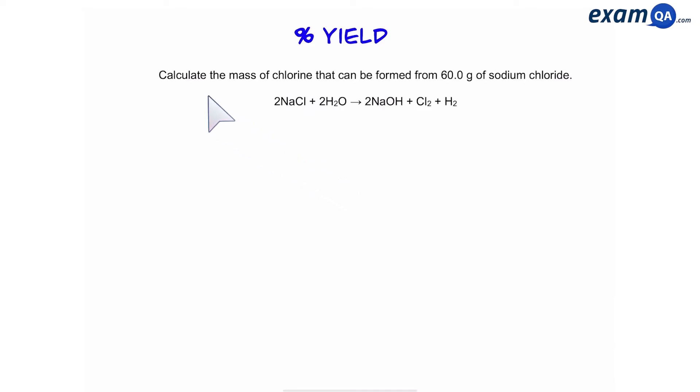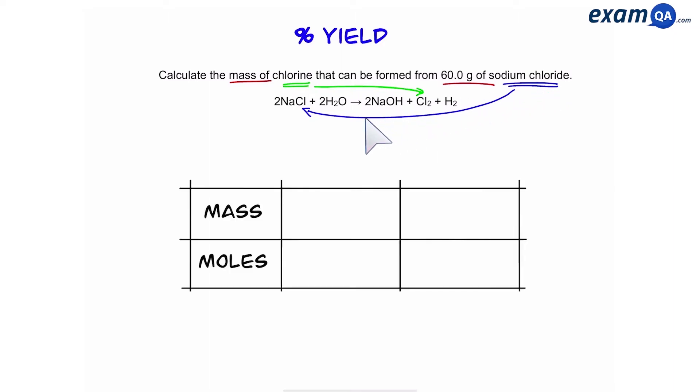Let's say we have the question: calculate the mass of chlorine that can be formed from 60 grams of sodium chloride. This is very similar to reacting masses. Just like before, we're going to write down mass of and grams of. So it's about chlorine and sodium chloride, those are our two main chemicals. Then we're going to create a table with mass and moles.